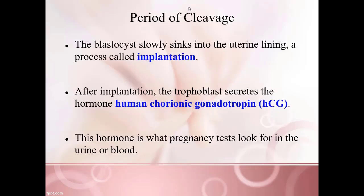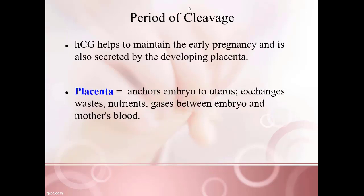As the blastocyst sinks into the endometrium — a process called implantation — the trophoblast will secrete a specific hormone called HCG, human chorionic gonadotropin. This is the hormone a pregnancy test looks for, whether in urine or blood. This hormone is only made when a fertilized zygote is implanting itself into the uterus. There has been some recent research that HCG is also made in males as a signal of testicular cancer, but that research is ongoing. HCG is critically important for survival of the embryo and helps maintain early pregnancy.